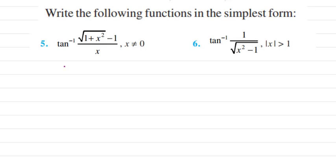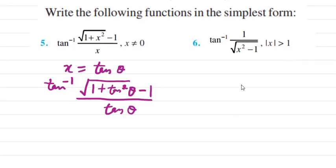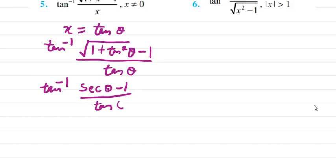Now let's solve question 5. Taking x = tanθ, the expression reduces to tan inverse of (√(1+tan²θ) − 1)/tanθ. This becomes tan inverse of (sec²θ − 1)/tanθ, which simplifies to (secθ − 1)/tanθ. Changing secθ to 1/cosθ and tanθ to sinθ/cosθ, after cancellation we get (1 − cosθ)/sinθ.